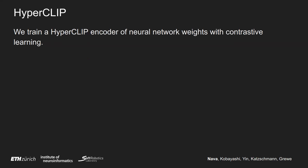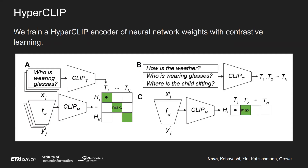One such technique is HyperCLIP. We train a HyperCLIP encoder of neural network weights with contrastive learning. In step A, what we are doing is sampling a bunch of tasks, each with their own descriptor — like 'Who is wearing glasses?' — and then training neural networks FW to solve these tasks. We then train two encoders: an encoder for the text of the question and an encoder for the neural network weights of the fine-tuned network, such that their respective embeddings have high cosine similarity for matching pairs and low similarity for non-matching pairs — contrastive learning.